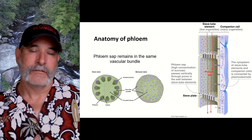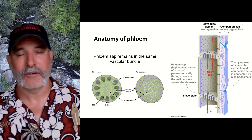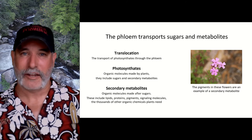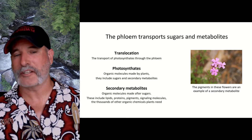Xylem and phloem are in the same vascular bundle, and phloem sap will remain in the same vascular bundle. Now, plants have their own terminology. There's translocation, which is the transport of photosynthates through the phloem.